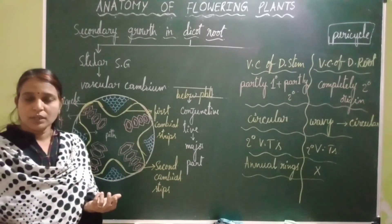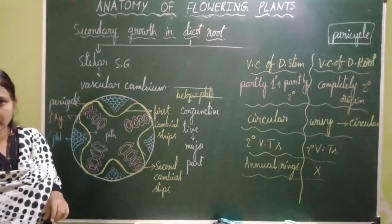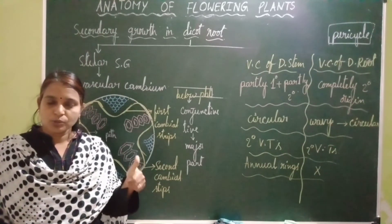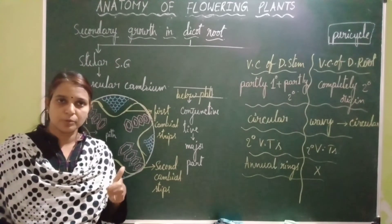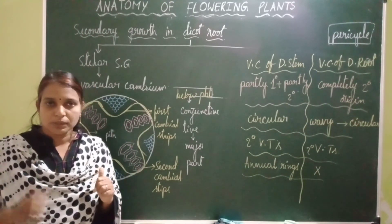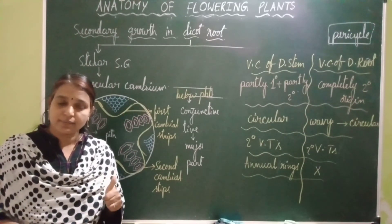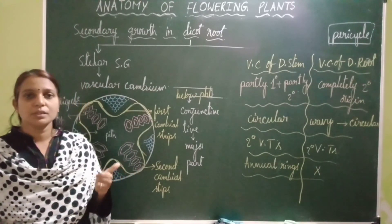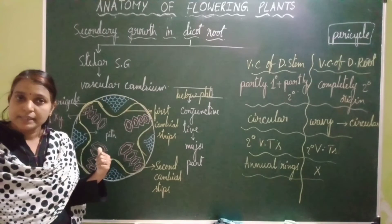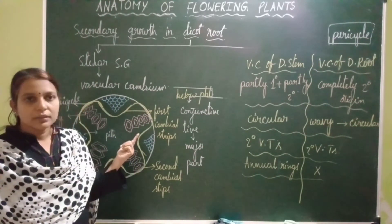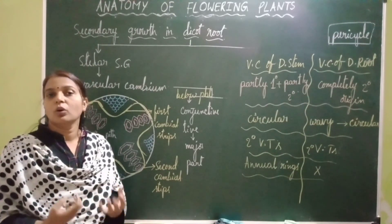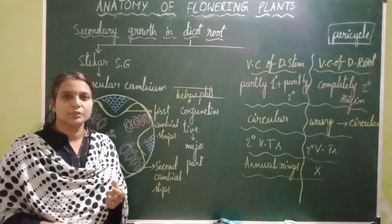This is all about secondary growth in dicot root, and with this we have completed the chapter on anatomy of flowering plants. We studied types of tissues — meristematic and permanent (simple and complex) — tissue systems (epidermal, ground, and vascular), anatomy of dicot root, monocot root, dicot stem, monocot stem, dicot leaf, and monocot leaf, and finally secondary growth in dicot stem and dicot root. Watch all the videos, grasp the concepts, and try to solve objectives from different materials. Thank you, students.